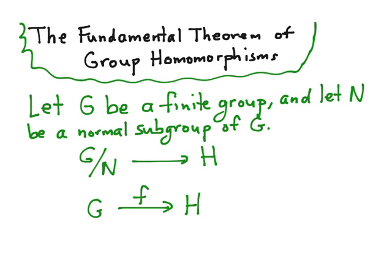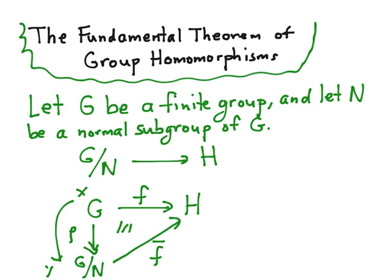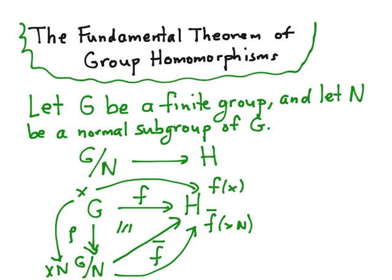Call that map F, showing that it's a homomorphism. Then we can build a map from G mod N to H by first looking at the canonical map from G to G mod N, which just sends an element in G to its coset, and then building a map from G mod N to H, called F-bar, such that this diagram commutes. That is, if I take an element X in G and go one way, it becomes XN, and then F-bar of XN. Whereas the other way it becomes F of X. For this diagram to commute, F-bar should be the map which sends the coset XN to the element F of X in H.